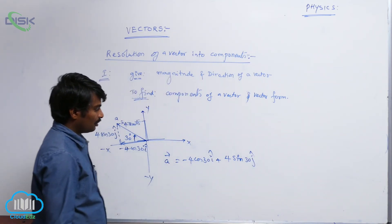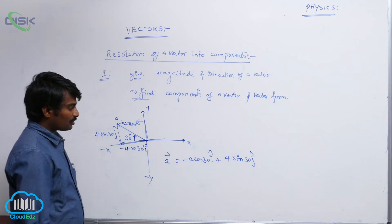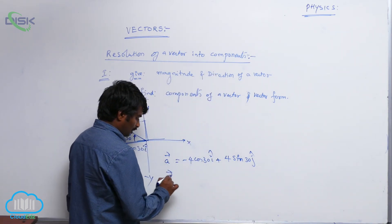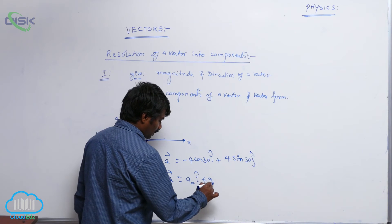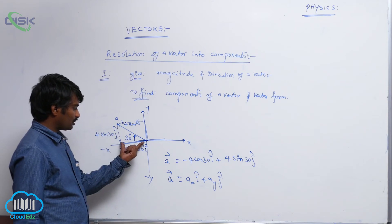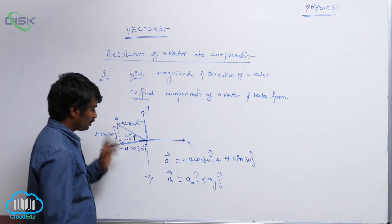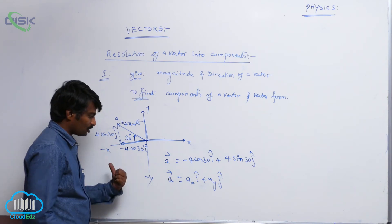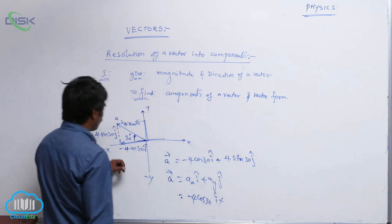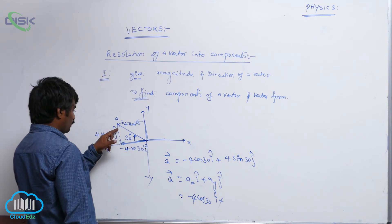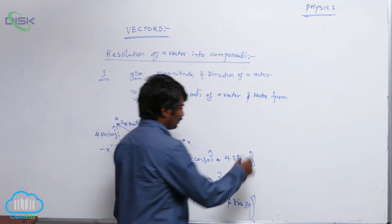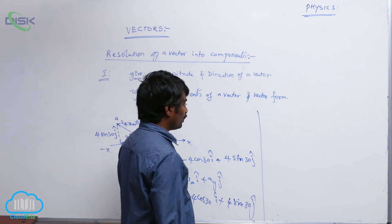Many students are habituated to writing A-bar = Ax i-cap + Ay j-cap. Since this vector is in the second quadrant, the x-component is negative and the y-component is positive. The x-component magnitude is 4 cos 30°, so it becomes minus 4 cos 30° i-cap. The y-component magnitude is 4 sin 30°, so it is plus 4 sin 30° j-cap. Writing vector form is very important.